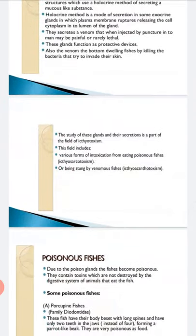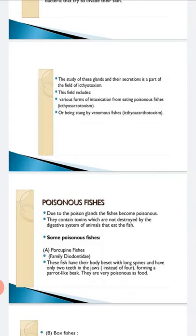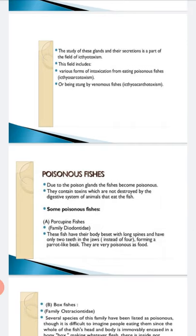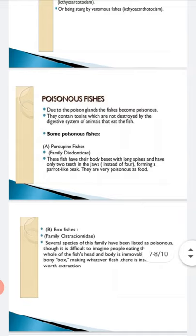Examples of poisonous fishes: the first is the porcupine fish — a beautiful fish, but poisonous. They have long spines and only two teeth in the jaws, forming a parrot-like beak. They are very poisonous as food; if eaten, they can cause mortality. The second is the box fish, which looks like a box and contains poison.